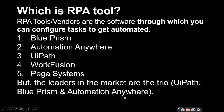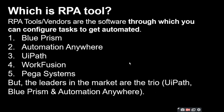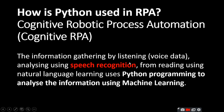Which are the RPA tools? The main RPA tools are Blue Prism, Automation Anywhere, UiPath, WorkFusion, and NICE Systems — that's 5 tools available for RPA. However, the 3 most popular ones are UiPath, Blue Prism, and Automation Anywhere.